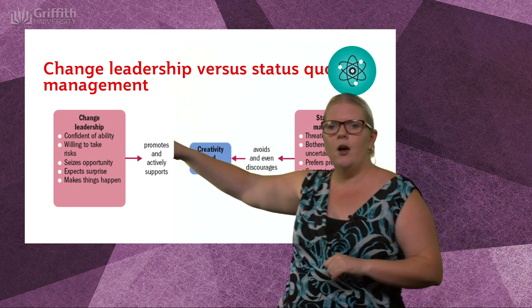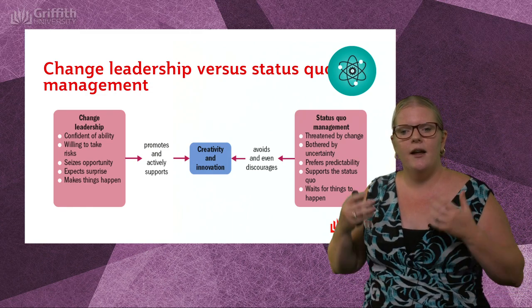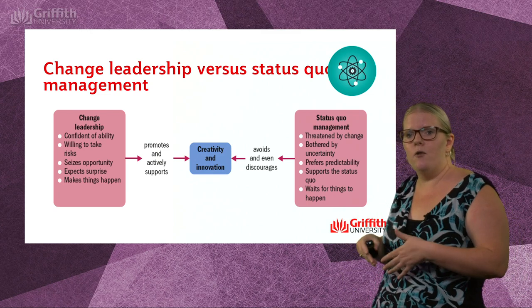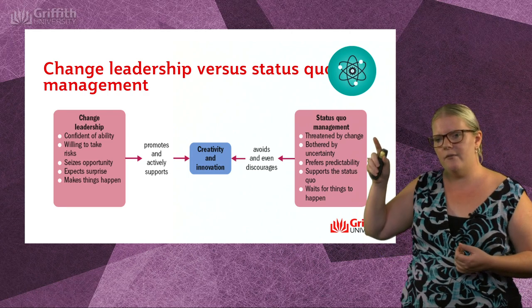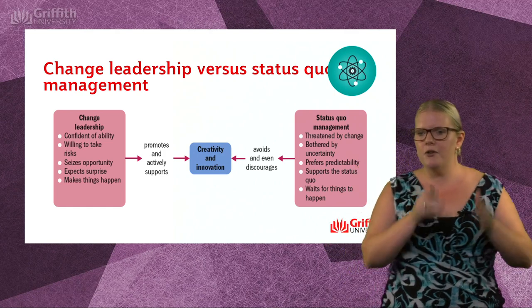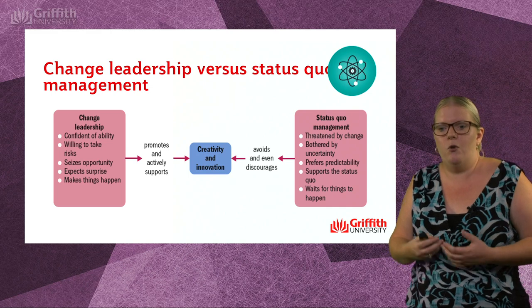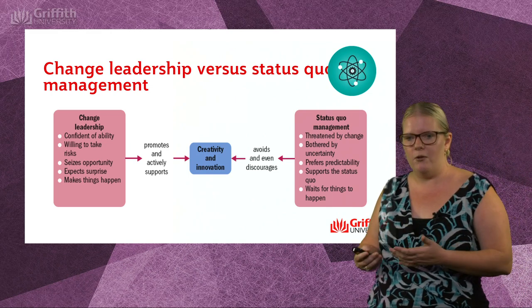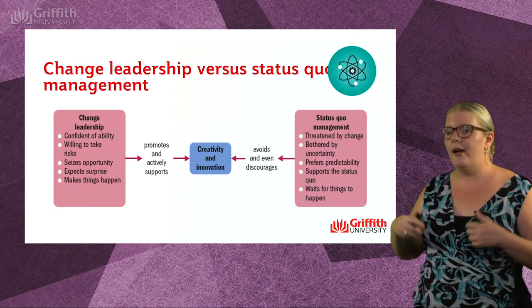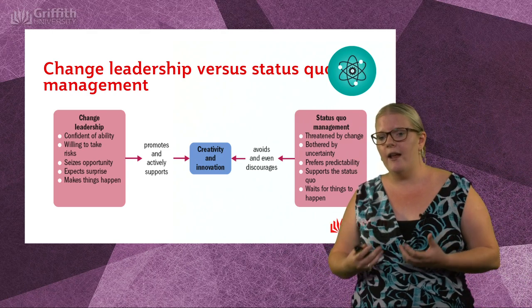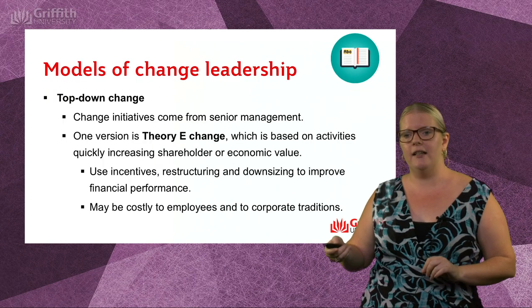If we're looking at a change leader, we've got managers who are confident in their ability, they're willing to take risks, they seize opportunities, they expect surprises, and they make things happen. A change leader promotes and actively supports the creativity and innovation needed to make that change happen. However, a status quo manager is someone who's threatened by change — they say we've never done it that way and we're not doing it now. This uncertainty of change bothers them, so they prefer predictable patterns, end up avoiding and discouraging creativity and innovation, and become more complacent. As a manager, your job is to work out which side of the continuum you want to be on — ideally the change leadership style.